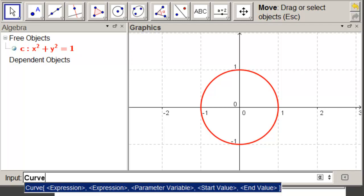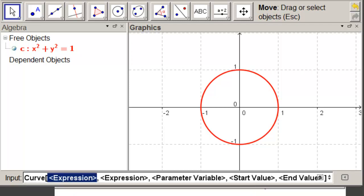Curve. This is the one we want. Expression. Our x was cosine of t. Tab, sine of t.